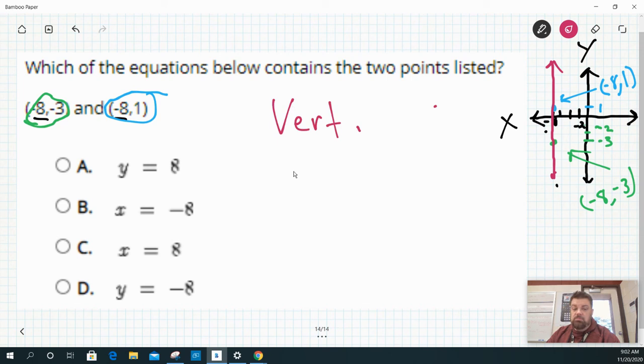Vertical lines are x equals a number. Well, what number does it equal? Negative 8. Because that's going to be the same. No matter what point I am on this line, my x value is always going to be negative 8.